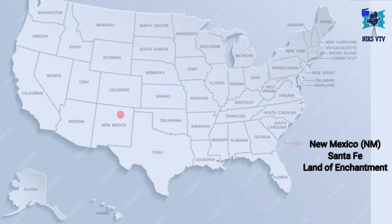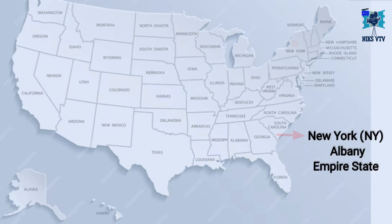Next state is New Mexico, its abbreviation is NM, its capital is Santa Fe, its time zone is MST, and its nickname is Land of Enchantment. Next state is New York, NY is its abbreviation, capital is Albany, its time zone is EST, and its nickname is Empire State.